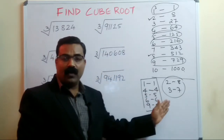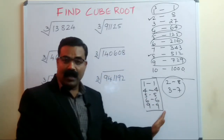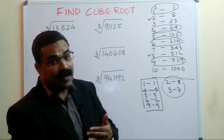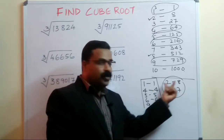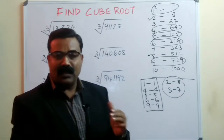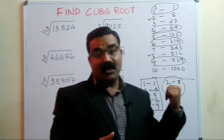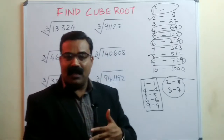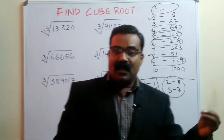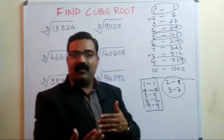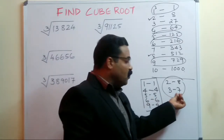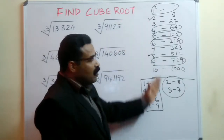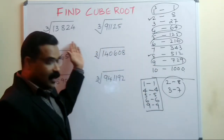To summarize the concept: digits 1, 4, 5, 6, and 9 map to themselves — the cube and cube root share the same last digit. The interchangeable pairs are 2↔8 and 3↔7. So if a perfect cube ends with 8, the cube root ends with 2; if the cube ends with 2, the root ends with 8. If the cube ends with 7, the root ends with 3, and if the cube ends with 3, the root ends with 7.